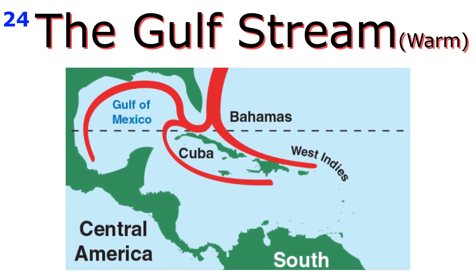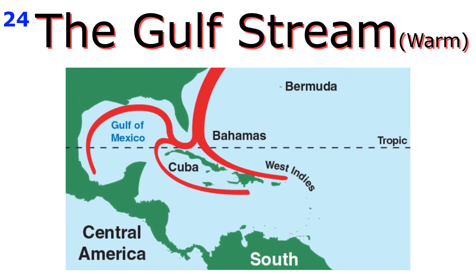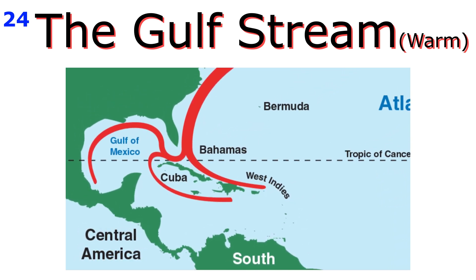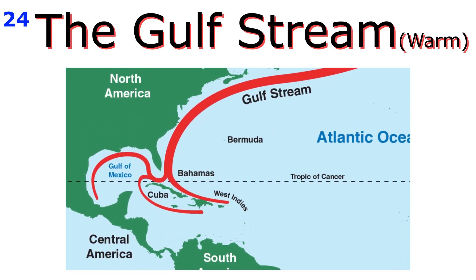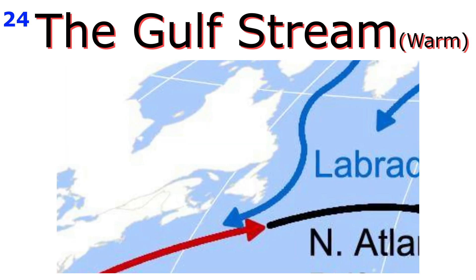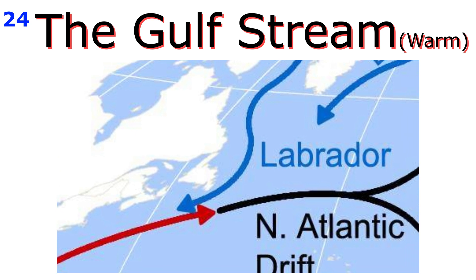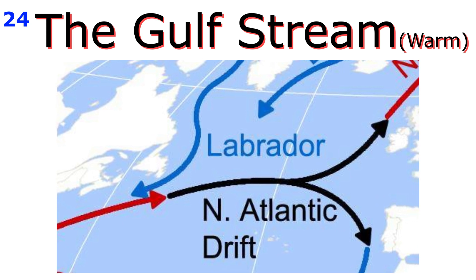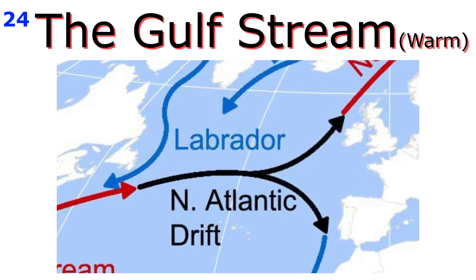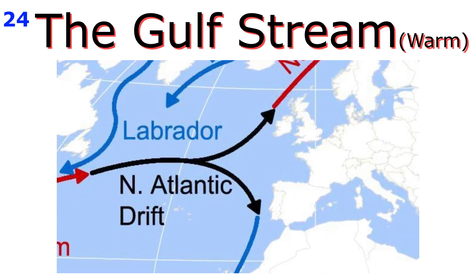The Gulf Stream originates in the Gulf of Mexico in the Atlantic Ocean. It is a swift-flowing warm current that flows northwards along the east coast of North America until it meets the cold Labrador Current near Newfoundland. The warm Gulf Stream is then forced to move by the westerlies, and as it moves across the ocean it is known as the North Atlantic Drift.